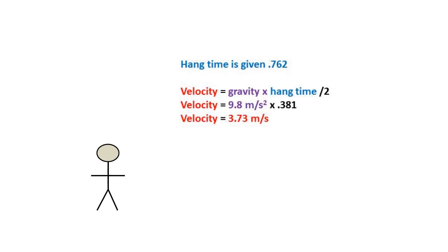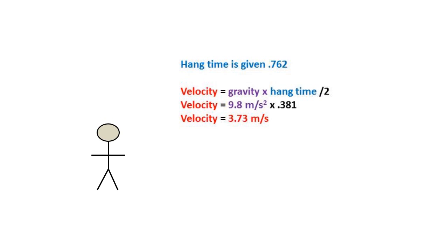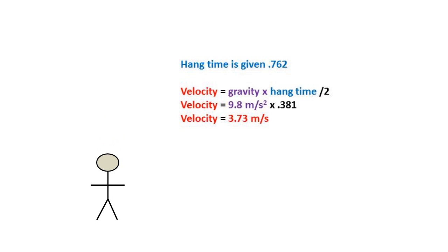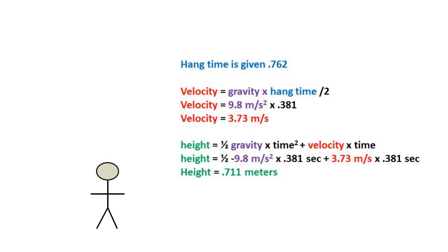Finally, let's solve the problem as if we are only given the hang time. To solve for velocity, we plug into the velocity formula treating it as a fall from the peak. The formula gravity times hang time over 2 gives us a velocity of 3.73 meters per second. For the height, we use the position formula of one half gravity times time squared plus velocity times time, plug in our numbers, and get a height of 0.711 meters.